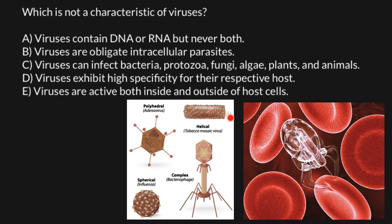Viruses can only infect certain species, and within those species they are highly specific to certain tissues. They can only infect tissues that have certain protein or carbohydrate structures on the surface of the cells to which these viruses would attach.